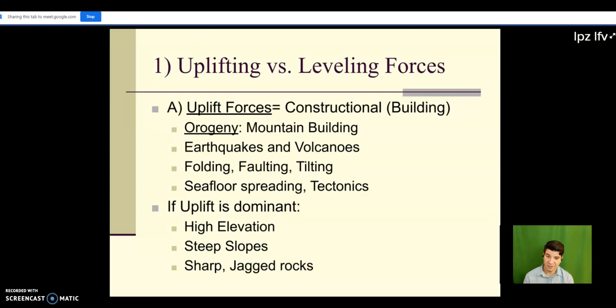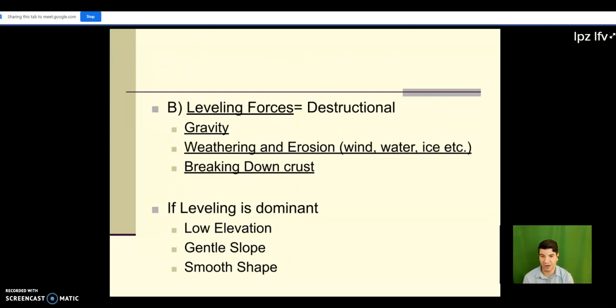We have faults, folds, and tilts. Folds is where it bends. Fault is where it cracks. Tilt is where it tilts. We have seafloor spreading, also known as plate tectonics. And if uplift is dominant, we're going to have high elevation, steep slopes, sharp, jagged rocks.